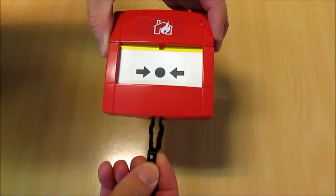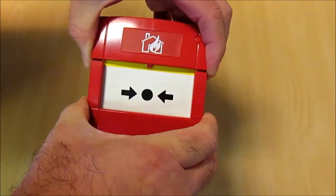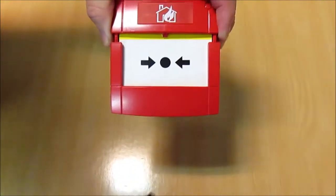To reset the call point, you insert the key into the bottom, push it as far as it goes, slide the front down like this, and remove the key.